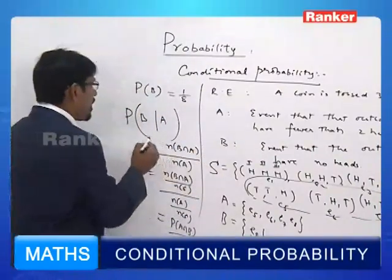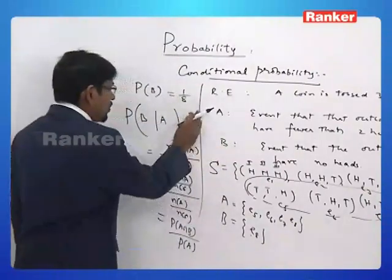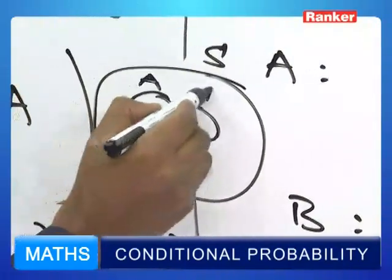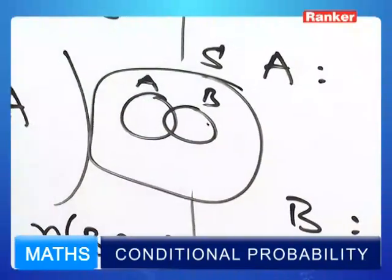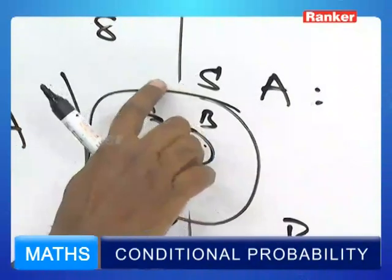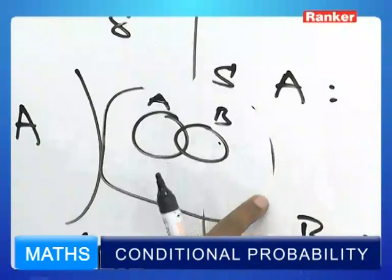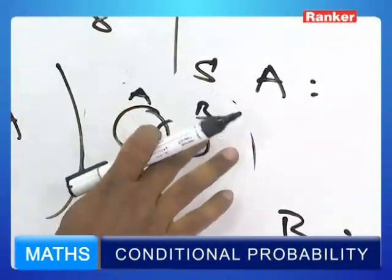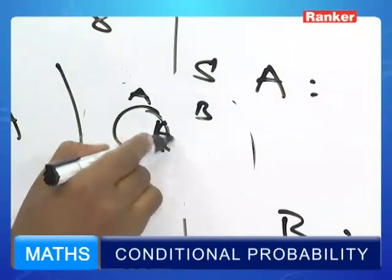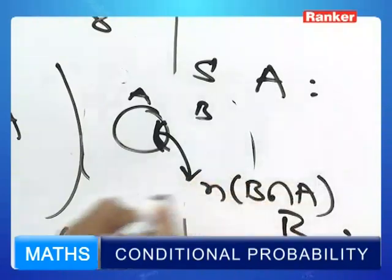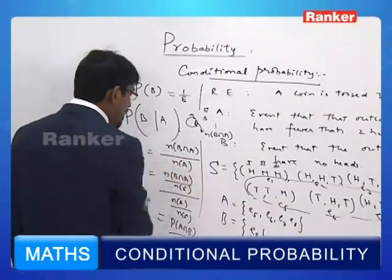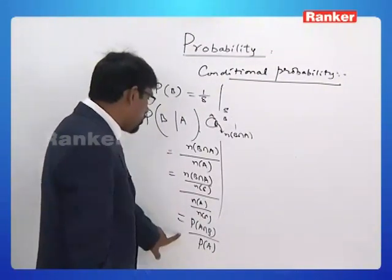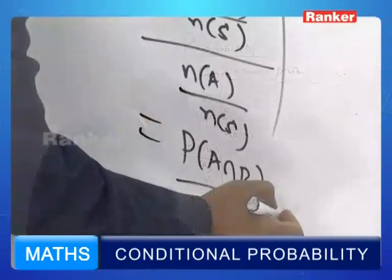We can put this in a Venn diagram. Here is S, with events A and B. We are interested in the probability of B given A. When you say B given A, the entire previous sample space is gone — you look only at the points favorable to A. Within that, the points favorable to B are the intersection, N(B ∩ A), out of N(A). So P(B | A) = P(A ∩ B) / P(A), provided P(A) is positive — that is, A is not an impossible event.